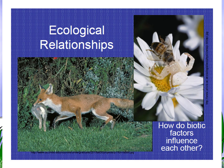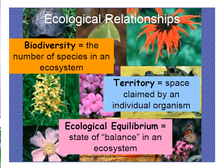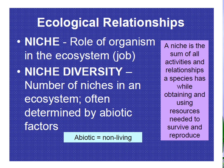In ecological relationships, we have biodiversity — the number of species in an ecosystem — territory, the space claimed by an individual organism, and ecological equilibrium, the state of balance in an ecosystem. We also have niche, which refers to the role of an organism in the ecosystem.